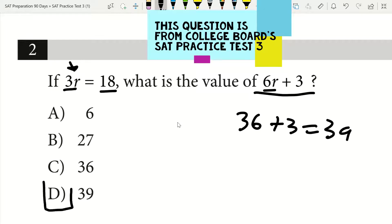Notice how much faster that is than if I was to divide each side by 3 here and then get 18 over 3 equals 6, then plug 6 in for R, do 6 times 6, and then add 3. Notice how many more steps that is.